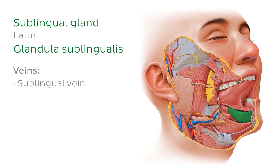For that reason, if you remember the arteries just mentioned, you'll have a sublingual vein, which you see here right next to the sublingual artery, and the second vein is the submental vein, following a similar path as the submental artery.